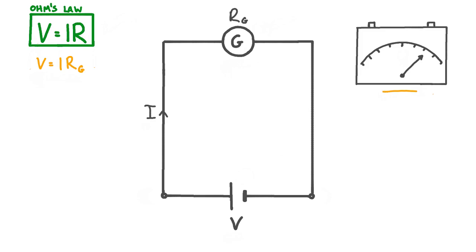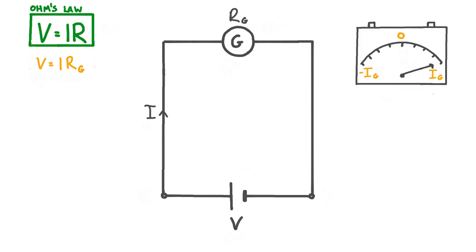This is down to the fact that galvanometers are really sensitive, and typically they can only measure up to a maximum current in the microamp or milliamp region. For example, we might find that the needle on our galvanometer reaches maximum deflection for a current of 100 microamps in either direction. This means that any current over 100 microamps will also just cause maximum deflection of the needle. So we can use a galvanometer as a voltmeter, but it would only be capable of measuring voltages within a very limited range. If the galvanometer has a maximum deflection current of IG, then it will reach maximum deflection for a voltage equal to IG times Rg. This expression basically tells us the voltage range of our galvanometer.